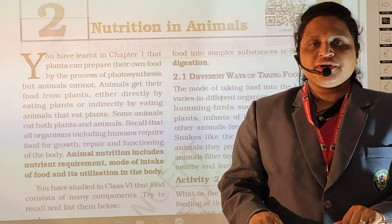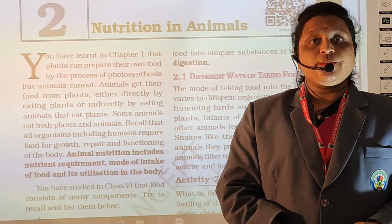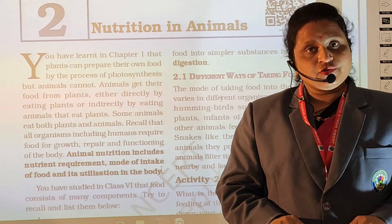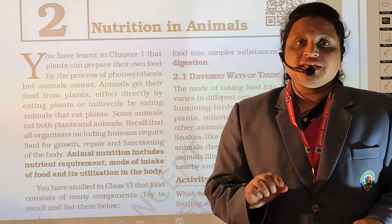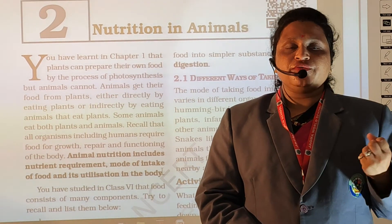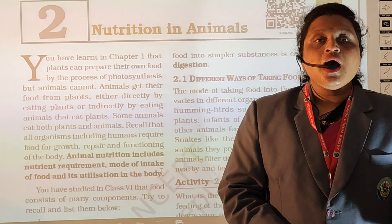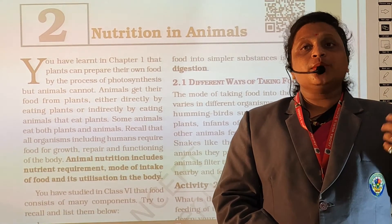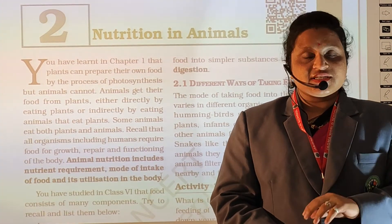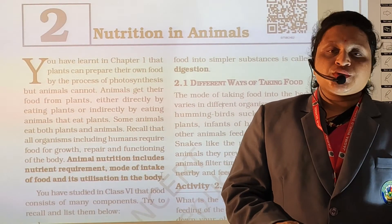In the previous video we saw that plants make their own food by themselves. This process is called photosynthesis. This process involves carbon dioxide, some amount of nutrition, and sunlight. The plant converts carbon dioxide into oxygen. This process is called photosynthesis.